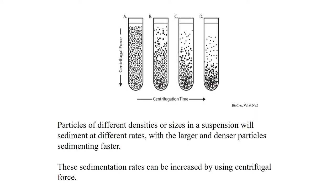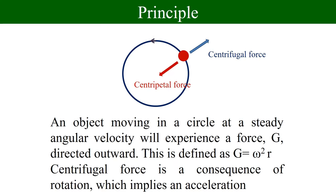Look at centrifuge tube A. It contains all kinds of particles — large, small, and medium-sized — uniformly scattered. If you allow this tube to stand for some time, based on gravitational force, the molecules slowly start settling. Initially, large particles settle down and bring some small particles along with them. You will see that the dark dots and open circles are mixed — the separation is not very pure; it is slightly contaminated. This is the problem when separation occurs based on gravitational force alone.